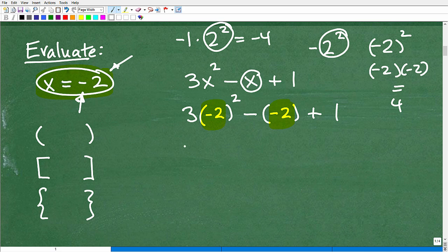But here, then I would have 3. Negative 2 squared is positive 4. A negative of a negative 2. It's the opposite of negative 2. That's plus 2 plus 1. So that's going to be 12 plus 2 plus 1 is 3. That would be 15.